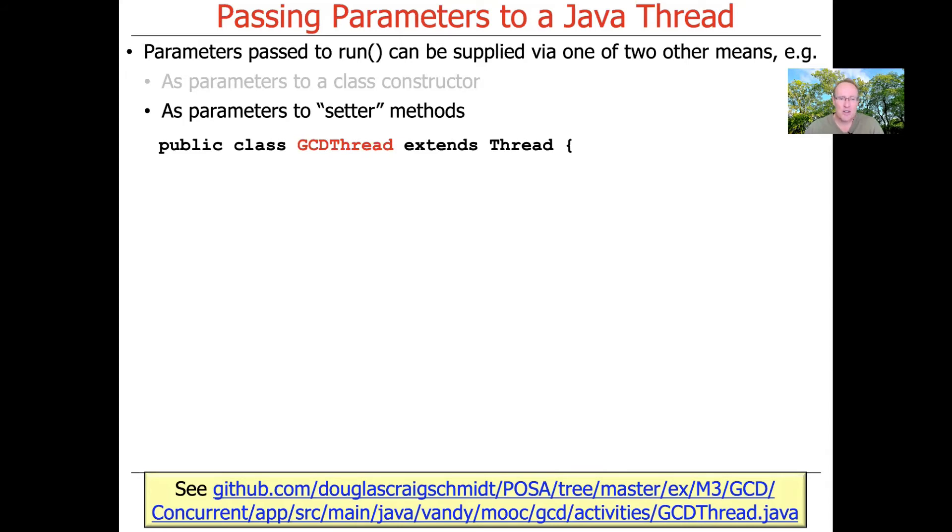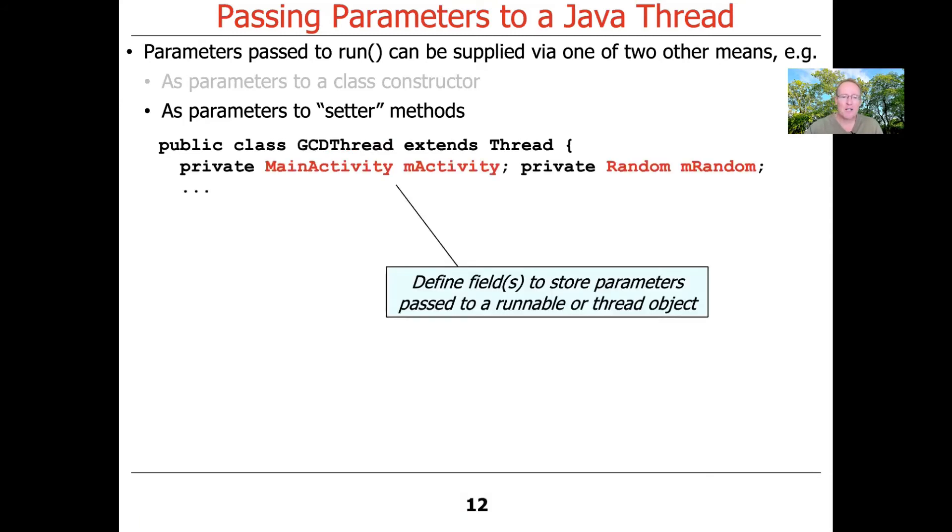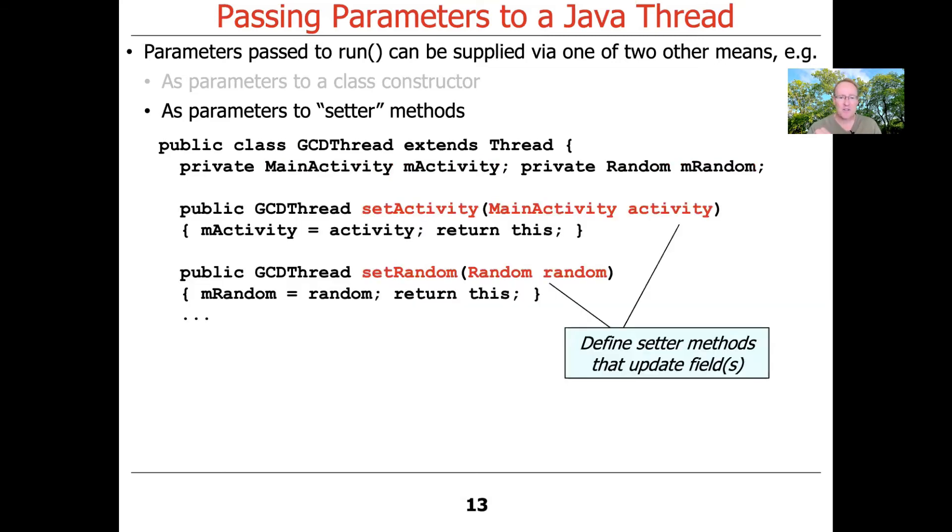So in this case, we're going to use the other alternative implementation, which is the one where GCD thread extends thread. And what it's going to do is it's going to have a field of type main activity called mActivity. It's going to have another field called mRandom of type random. And we're going to show how we can set these various fields.